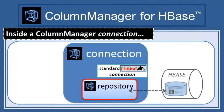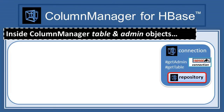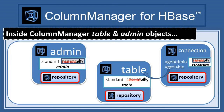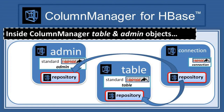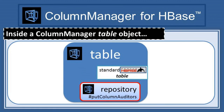The repository is the encapsulated center of all operations that read or write metadata to Column Manager's repository table. This repository object comes into play when you obtain an admin or table object from your special connection. The special admin or special table that you get is just a thin wrapper around a corresponding standard HBase client object. As these special wrapper objects are instantiated, they are also passed the repository object that belongs to the connection, which is how the magic happens behind the scenes.